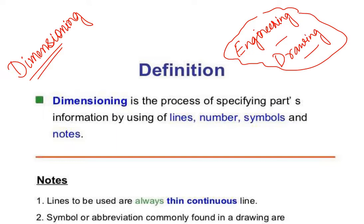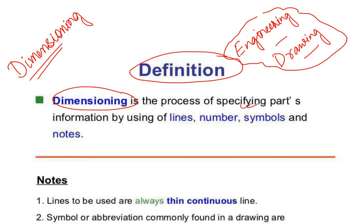So, what is dimensioning and its definition? Dimensioning is the process of specifying. Dimensioning is the most important part of this topic. What do you specify? Parts — parts are the information shown in the drawing.